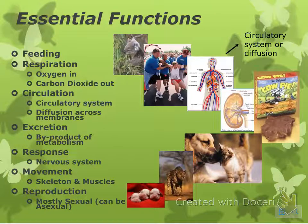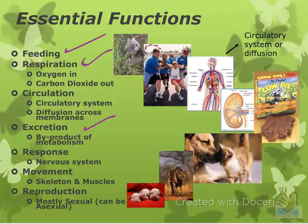So essential functions: we can feed — we have feeding systems. Respiration: we breathe oxygen in and breathe carbon dioxide out. We have a circulatory system and diffusion across membranes — diffusion is the movement of particles across your cell membrane. Excretion is waste, a byproduct of animal metabolism. We respond to stimulus, which is why we have a nervous system. We can feel and touch things. And movement, which involves skeleton and muscles. And then reproduction.